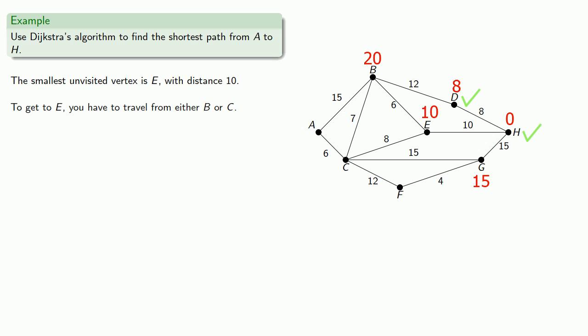Now to get to E, you have to travel from either B or C. If you go from B, the distance to H through E will be 6 plus 10, which is 16. What's important here is that this is smaller than the current amount, 20, and so we replace it.